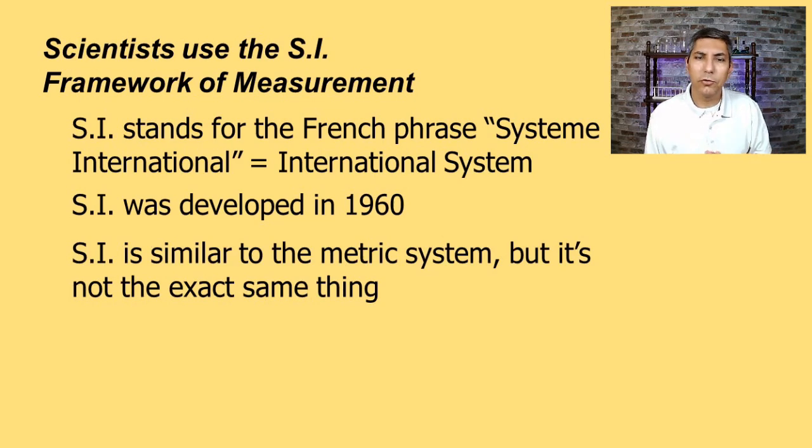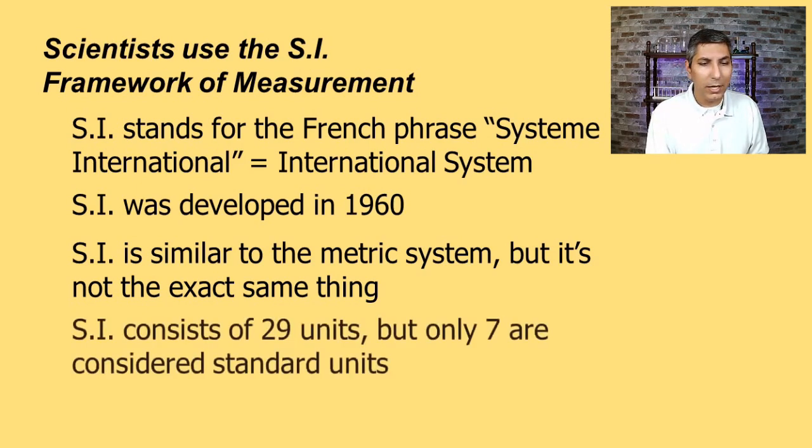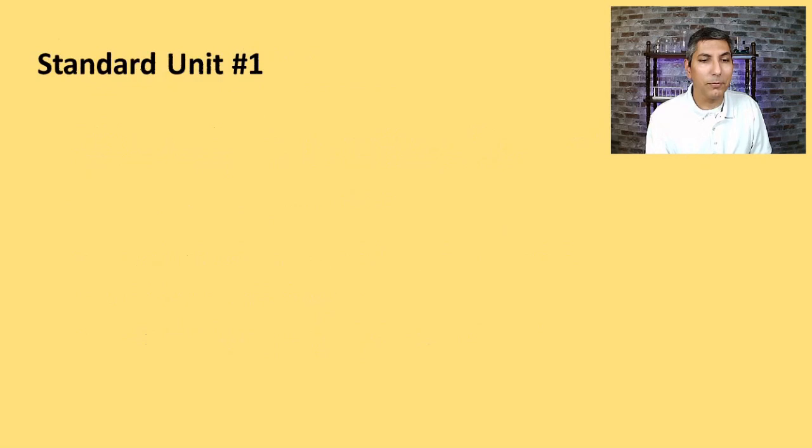SI was developed and adopted in the year 1960. And there is a misconception that SI is the same thing as the metric system. As it turns out, it's similar to the metric system, but it's not the same thing. Later on in this video, see if you can spot a major difference between SI and the metric system. Now, SI consists of about 29 units, but only seven of those are actually considered standard units. And we're going to learn about five of those standard units in this video here.